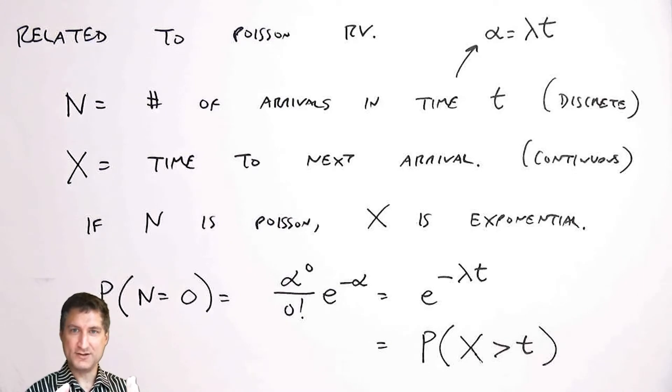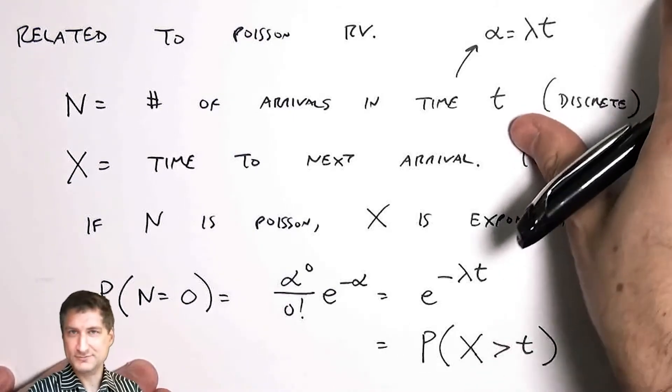Either I can say what's the probability that I get zero arrivals in this time interval, or what's the probability that I have to wait more than t units to see arrival. One is a discrete problem, one is a continuous problem, and I can see that they're kind of related in this way.